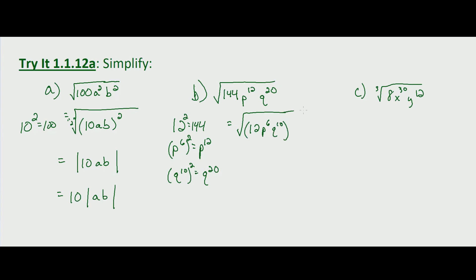The entire thing is being squared, and again with an even index and even power, we have to take the absolute value. I'll include the absolute value of the whole number as well just so you can see what we're doing. So this equals the absolute value of 12 p to the 6th q to the 10th.